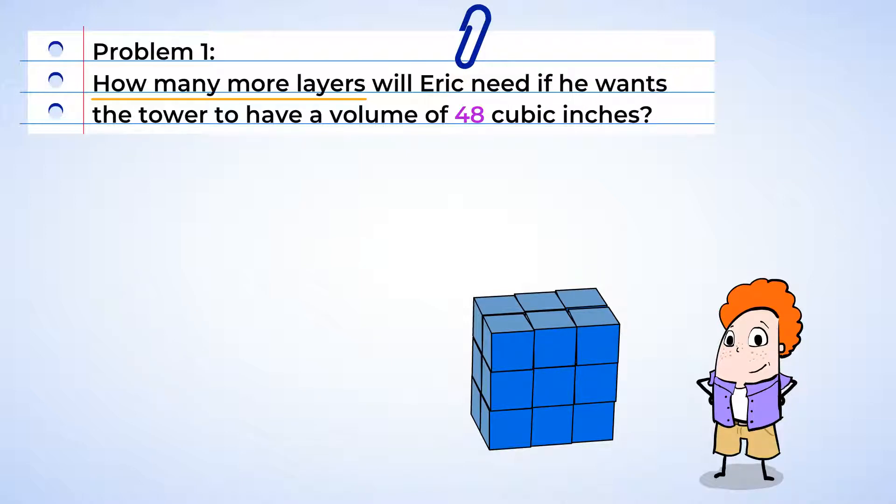All right, here we go. Now, Eric has three layers that each have six blocks in them. This means that he currently has a volume of 18 cubic inches. Now we can first find out how many more blocks Eric needs by subtracting. 48 minus 18 is 30. So he needs to use 30 more blocks.